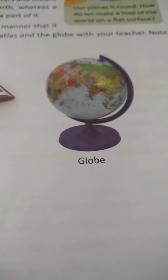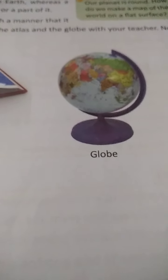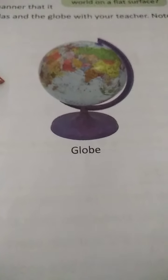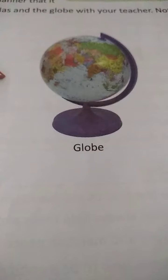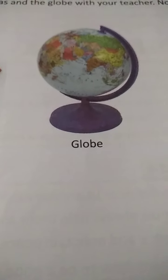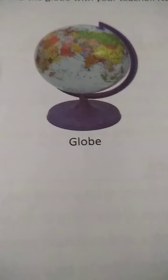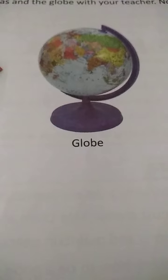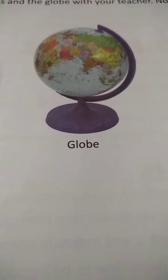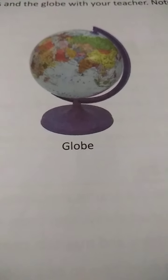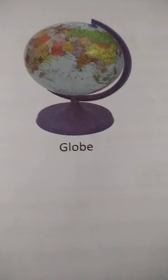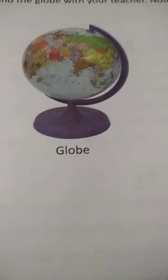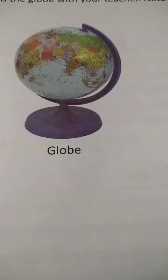Globe. We also use globes to learn about places. A globe is a model of the earth with continents, countries, rivers and oceans marked on it. It represents the whole earth, whereas a map represents either the whole earth or a part of it. It is like a ball mounted on a base in such a manner that it can rotate like the earth.